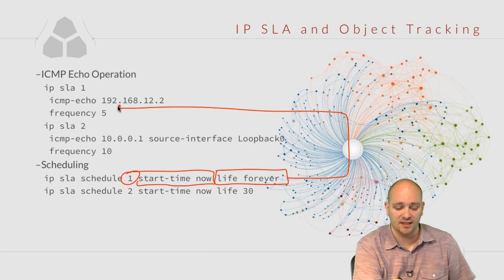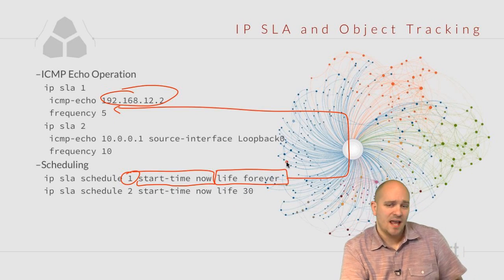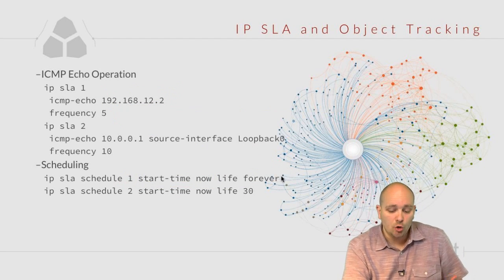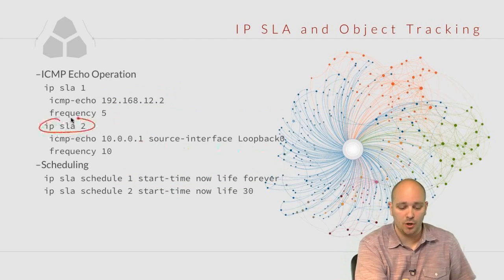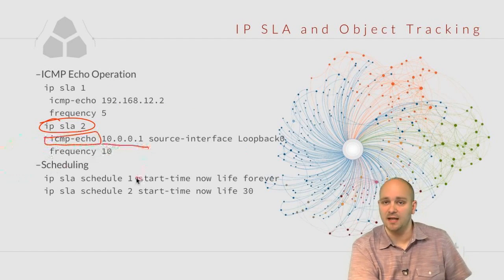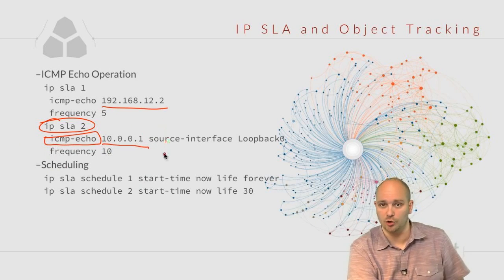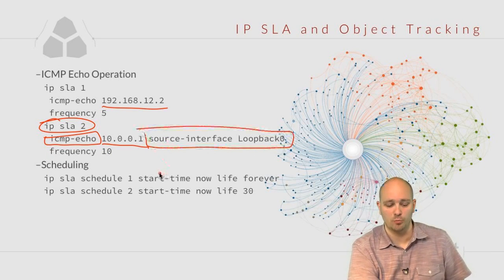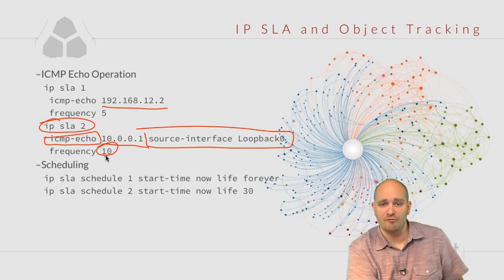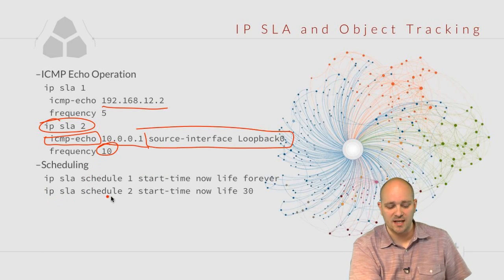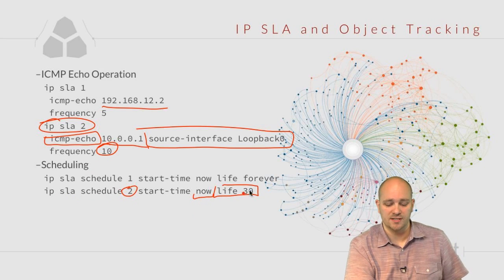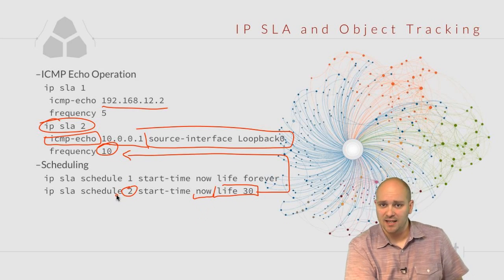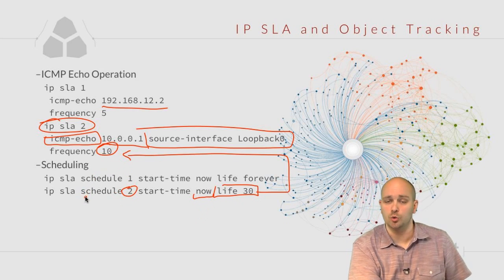Our operation doesn't have to be so simple. Here is operation number 2 — it is still an ICMP echo operation pinging IP address 10.0.0.1, but this time I'm specifying the source interface loopback 0 and pinging every 10 seconds. The schedule for this starts operation 2 at the time of typing the command, but runs for only 30 seconds — meaning three pings 10 seconds apart — and then operation 2 stops.